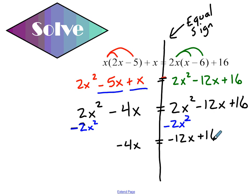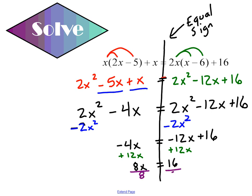I want to get x alone, so I'm going to add 12x on both sides. Negative 4x plus 12x is going to be 8x, and I'm left with 16 on the other side. Divide both sides by 8, and I'm left with x equals 2. That's my final answer.